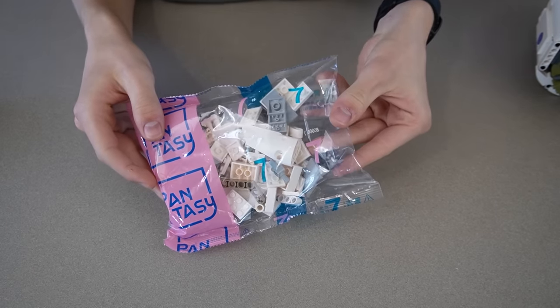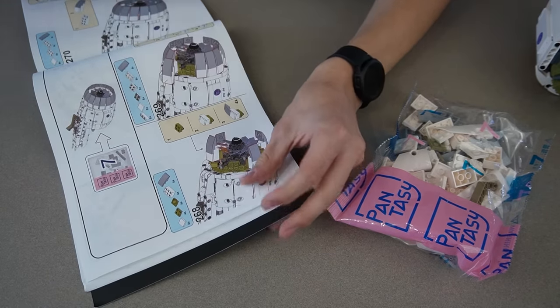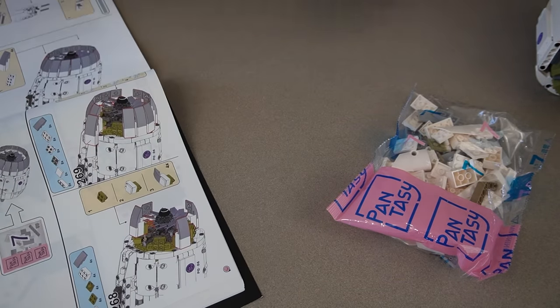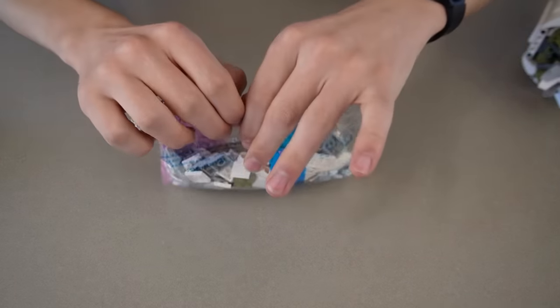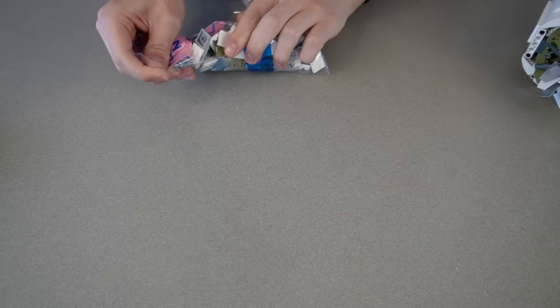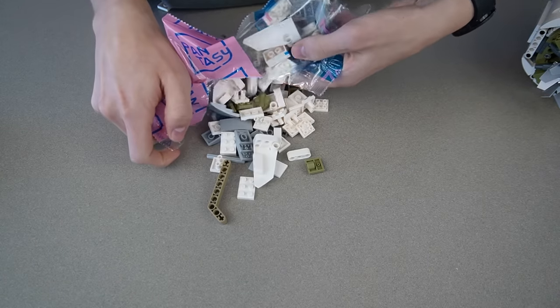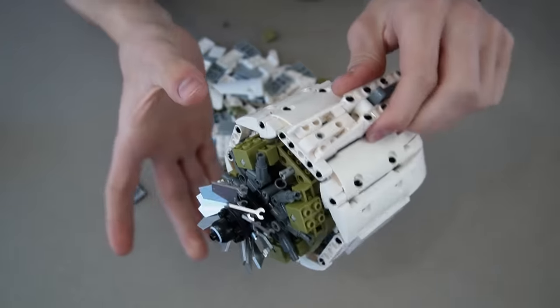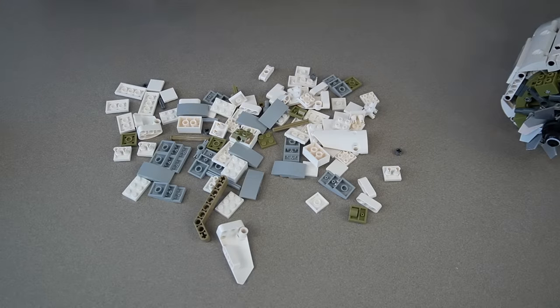Okay, so there's only one bag seven and I'm on step 268. So I'm over halfway through. So that's good. So it's the part that goes around right here. So it'll add more bulk to it. Let's build.